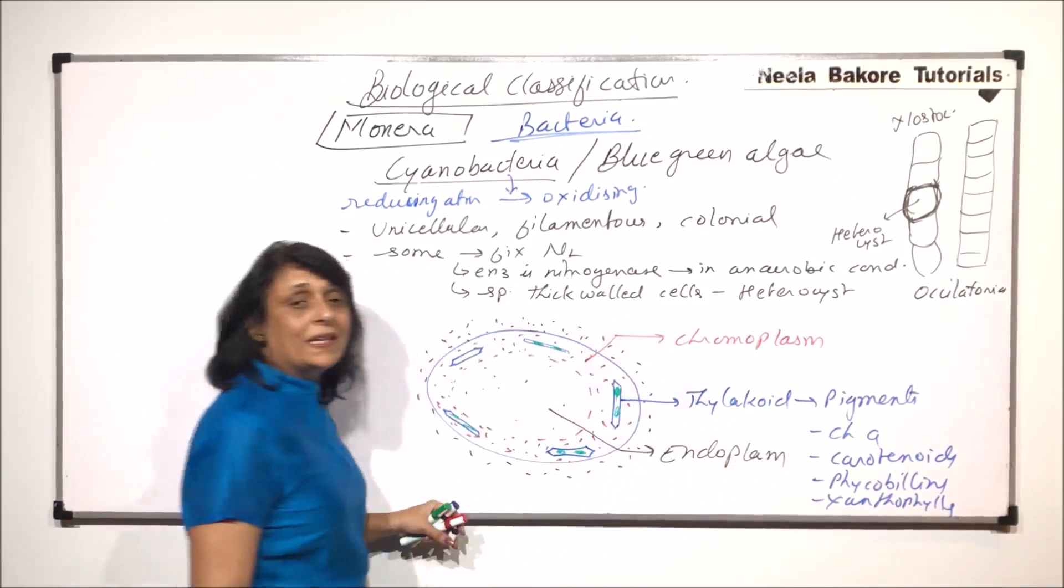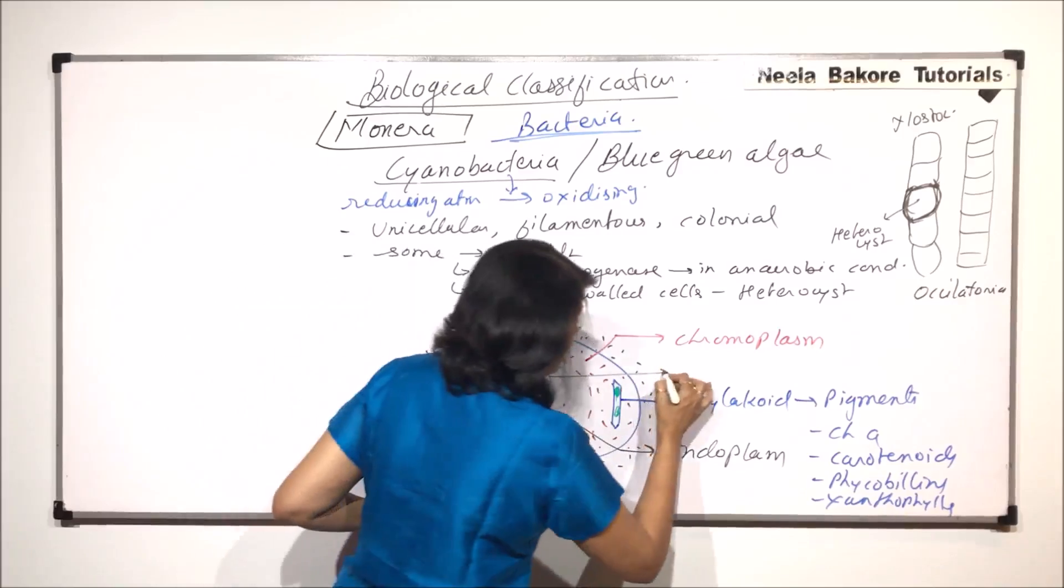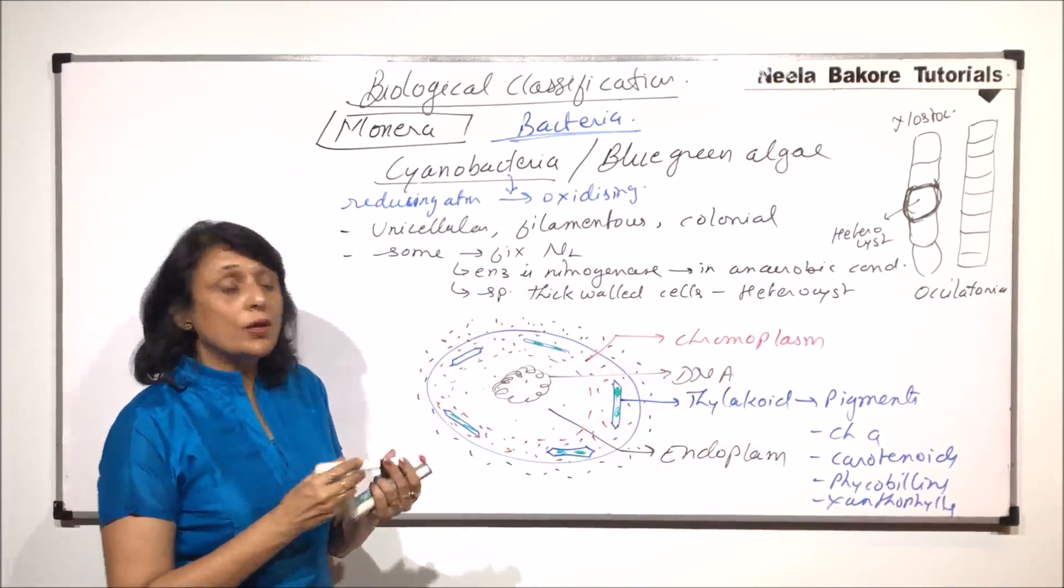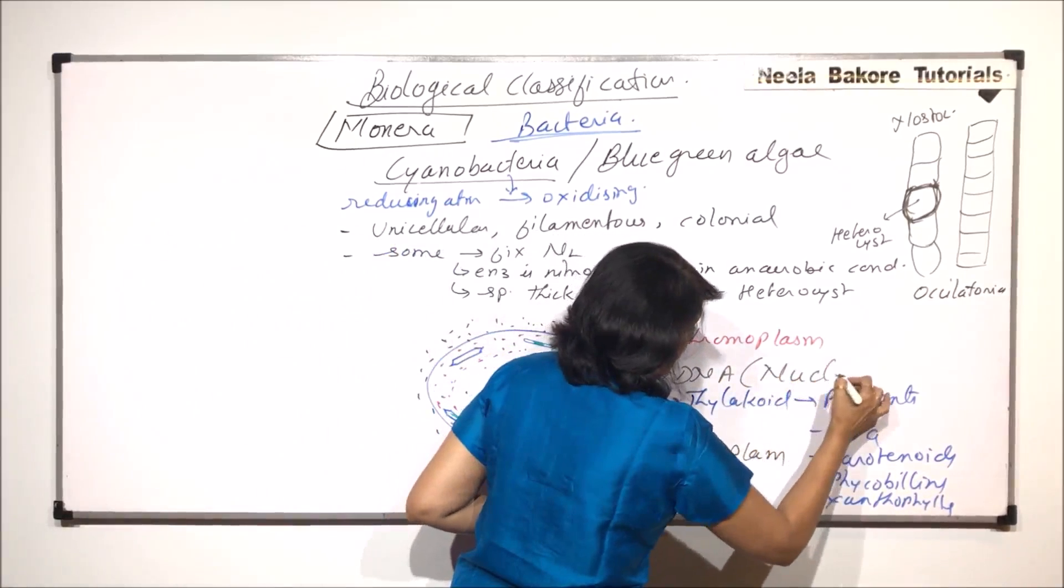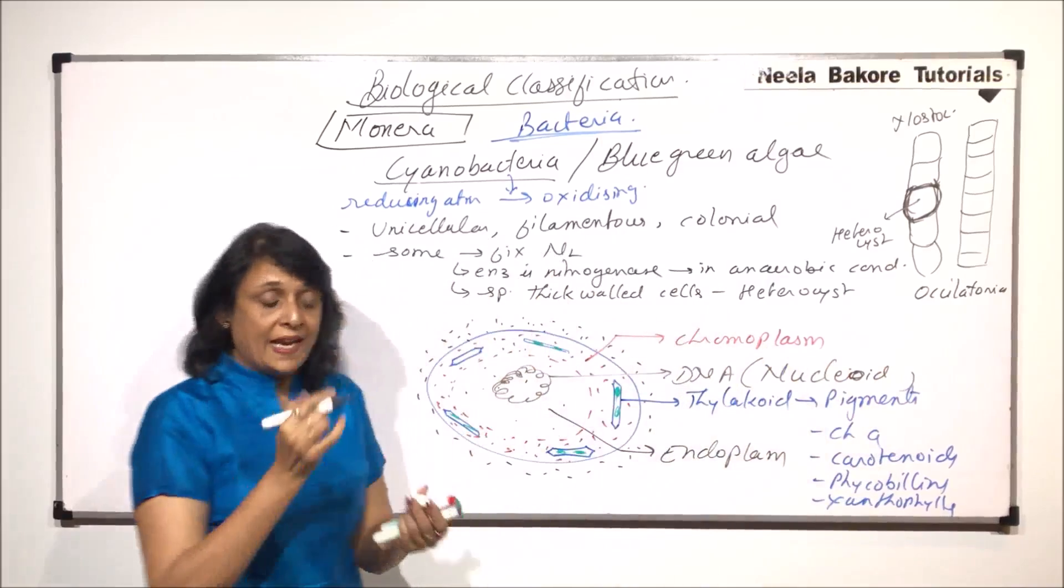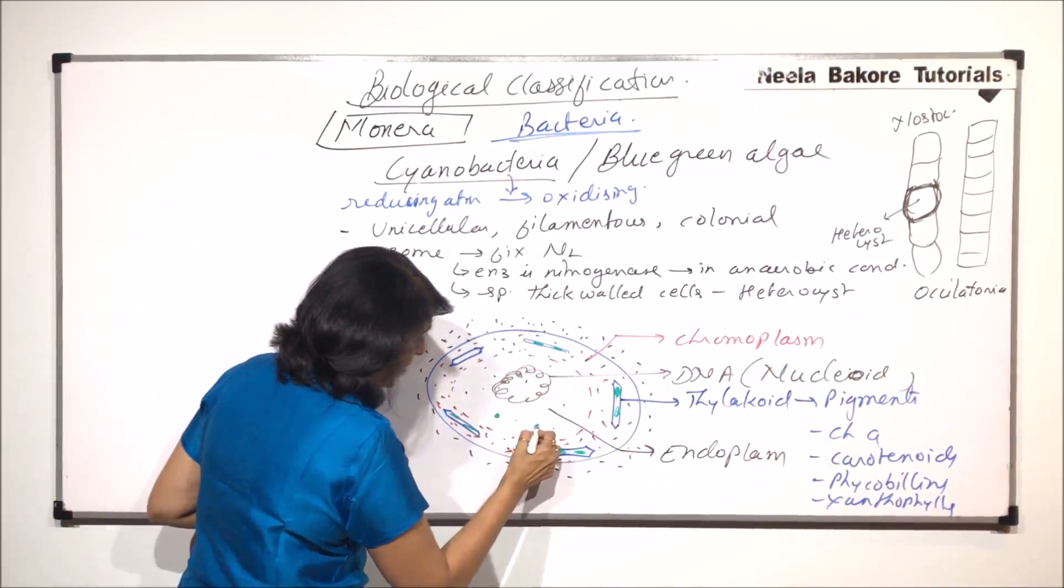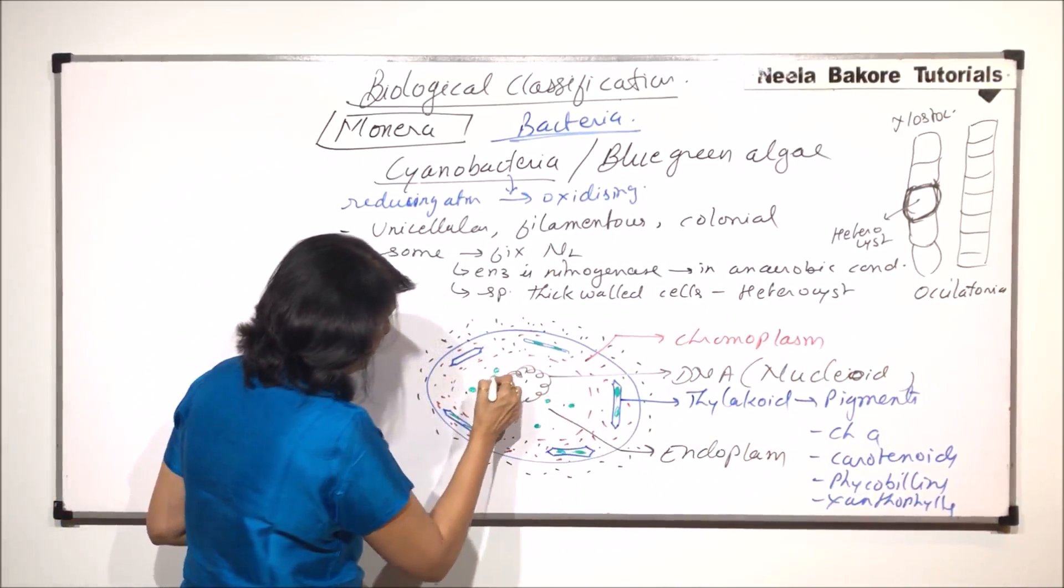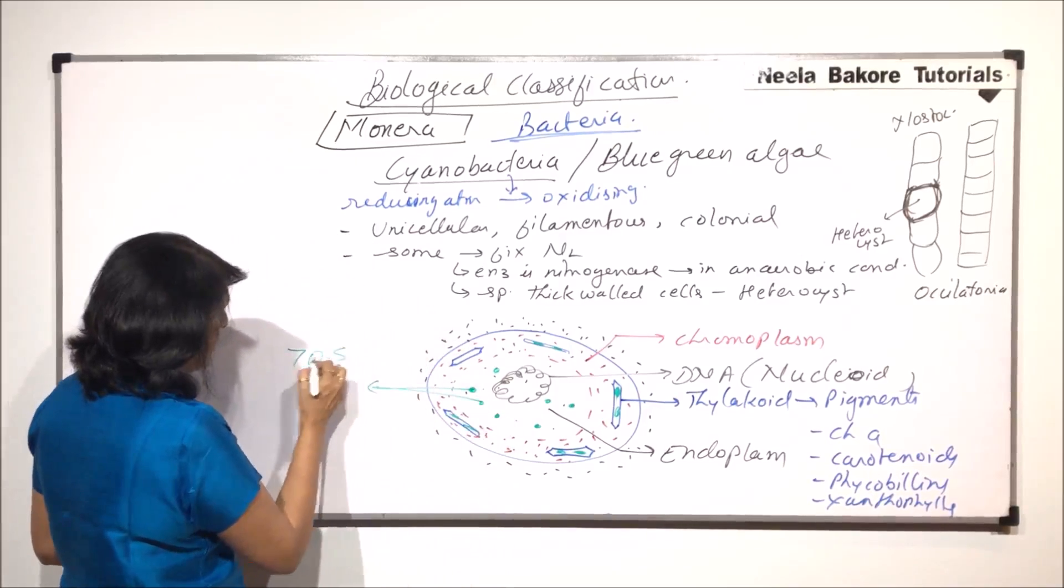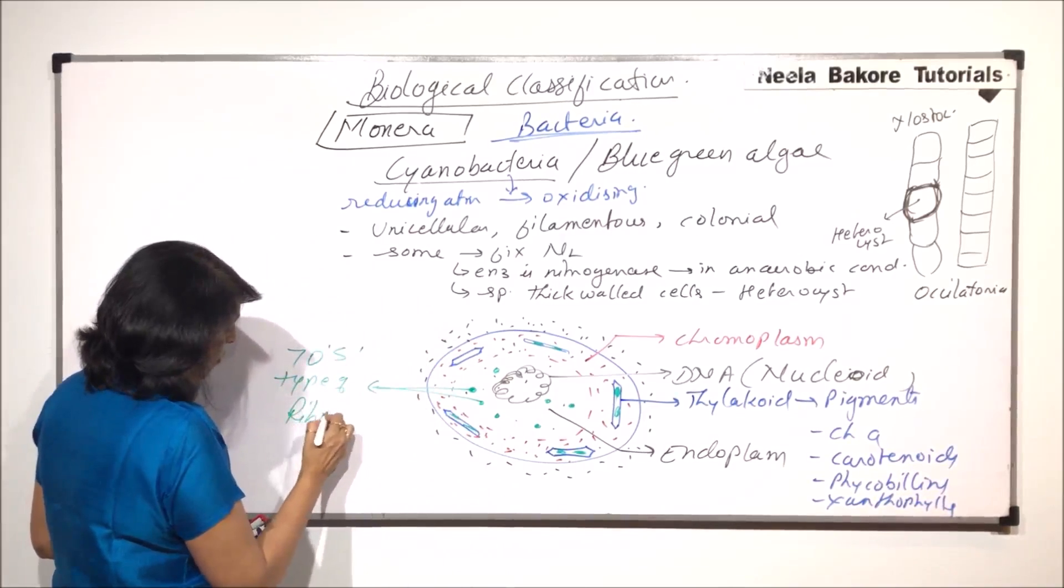And in this centroplasm is present that circular genetic material. So this is the DNA or genetic material or nucleoid, nucleoid which is there inside the cytoplasm. Here, there are ribosomes also. And these ribosomes are 70S type of ribosomes.